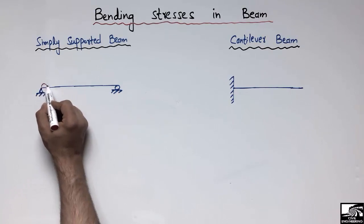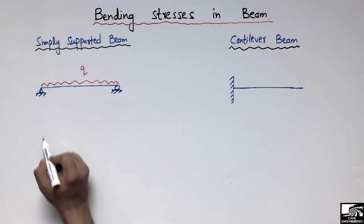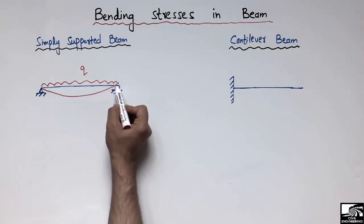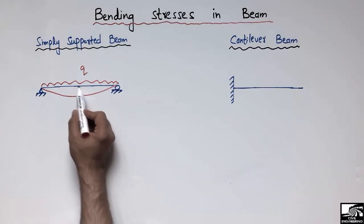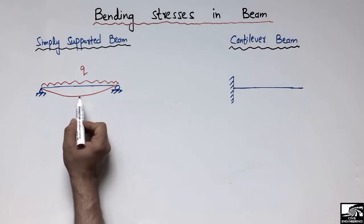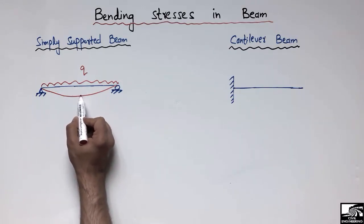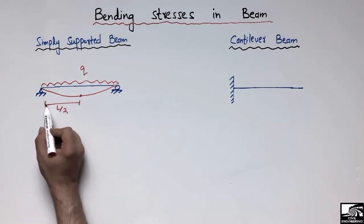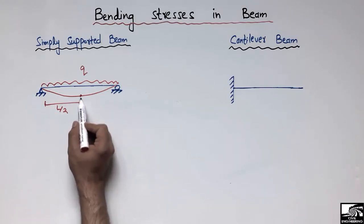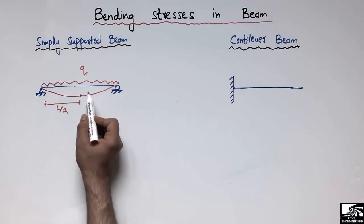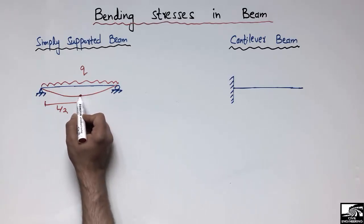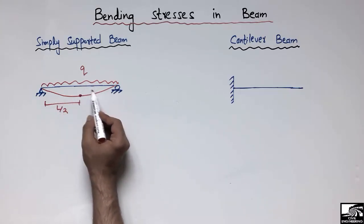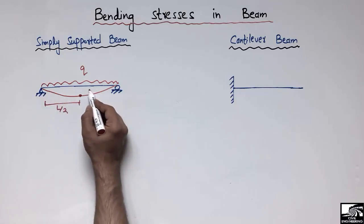If we load this beam with a uniformly distributed load Q, the beam will show deflection. Because there is no support in the middle, the beam will show maximum deflection at the midpoint, which is L/2, where L is the total length. This point at L/2 is the critical point for maximum bending stresses under a uniformly distributed load.